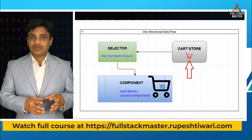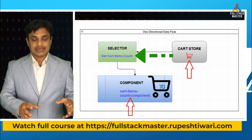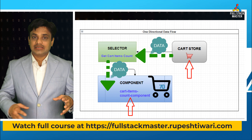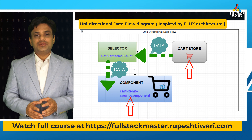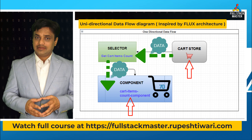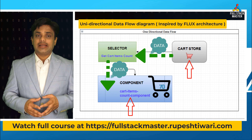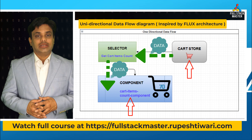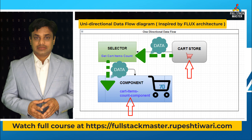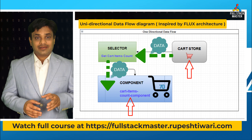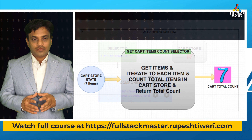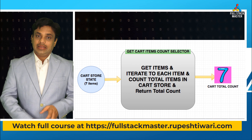If you notice here, we have cart store, which is the box where the design store is written. Whenever you want to show some data in the component, your data will flow from store to the selector and from selector to the component. This is a one-directional data flow. In our product mart application, we have a cart state which has cart items in it, and selectors are written on top of the store. Therefore, let us go ahead and write the selector function first.